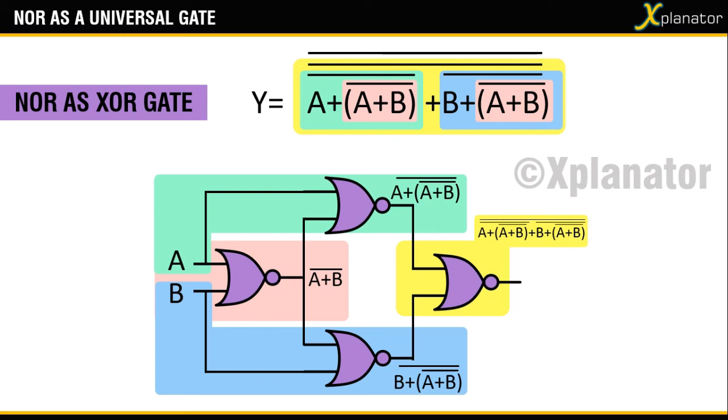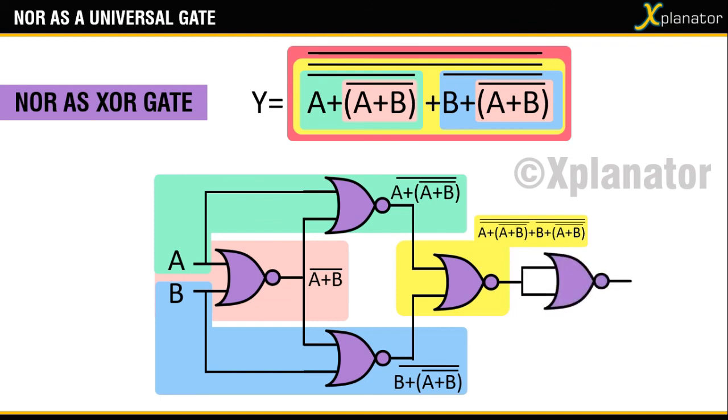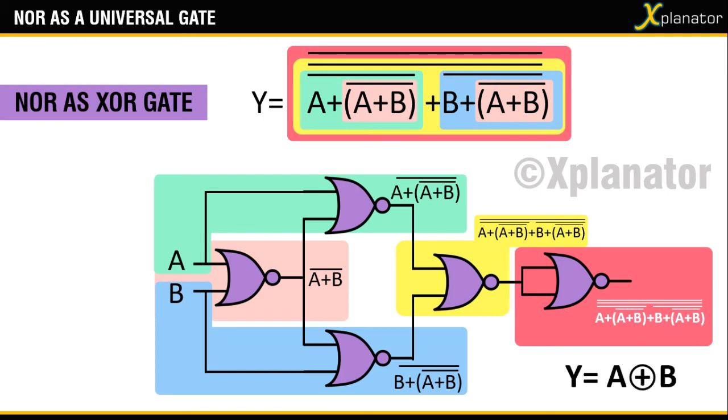The output will be the shaded equation in yellow, and to draw the last part which is shown in red, you need a NOT gate which can be created by shorting the inputs as shown in the previous video. We have covered all the parts which are to be drawn and the end result is a combination of 5 NOR gates to give you an XOR gate.